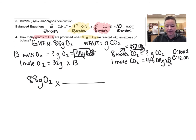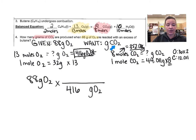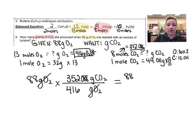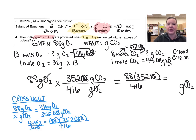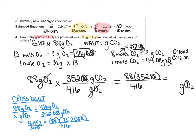I always begin with what I'm given — 88 grams of oxygen. On the bottom of my conversion factor I put grams of oxygen because I don't want grams of oxygen anymore, so I put 416 grams of oxygen. On the top I put the unit I want — grams of carbon dioxide — so I put 352.088 grams of carbon dioxide on the top. I will also put the cross multiply method in another color so you can see that setup. If you calculated correctly, you should get 74.65 grams of carbon dioxide.